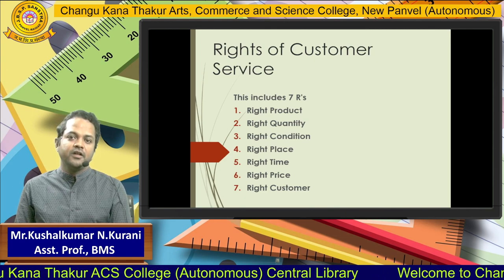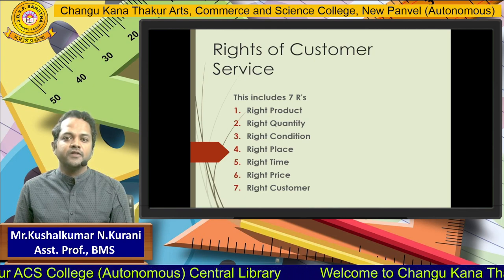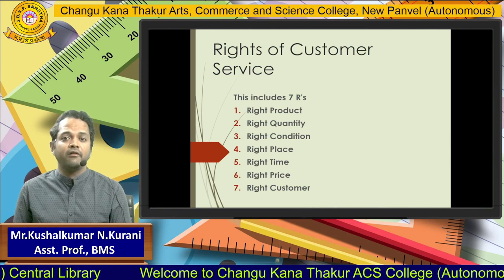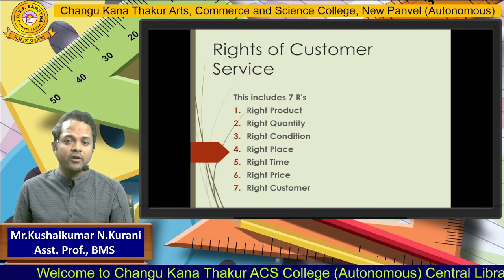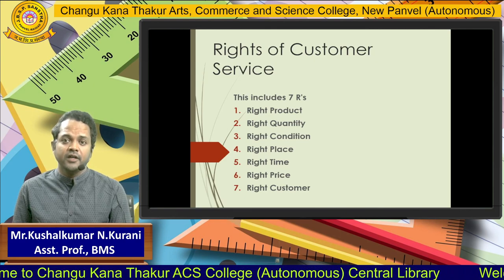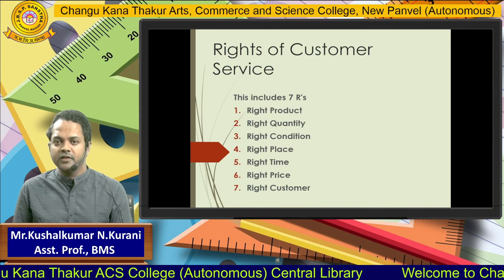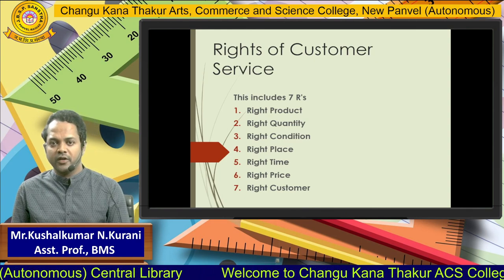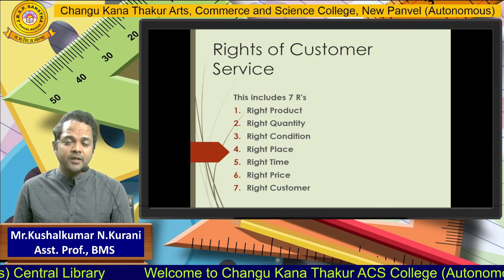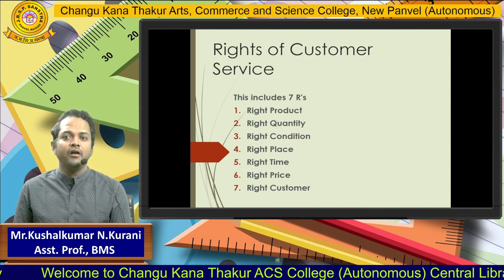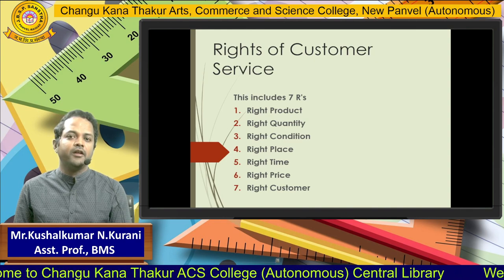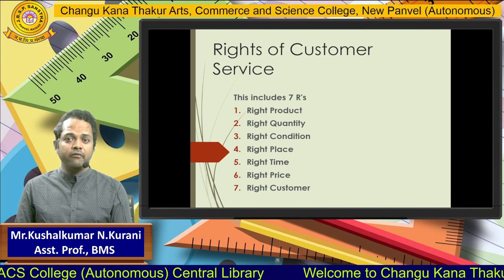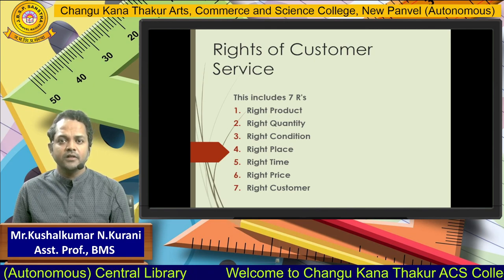Next is right place. Whatever address the customer provides, the company has to cross-check or verify the address before delivering the product. Otherwise the product may go to some other customer. The cost will go up because most of the money is spent in handling the product from the company until it is delivered. If the product goes to the wrong customer, it will be returned, impacting the cost and ultimately the bottom line — the profit of the company.